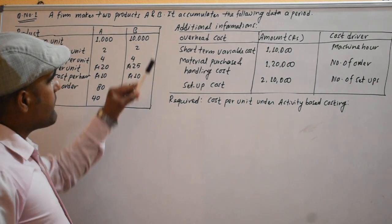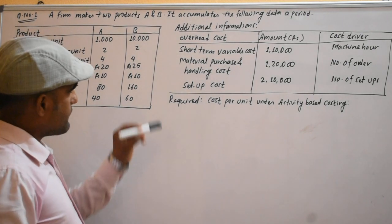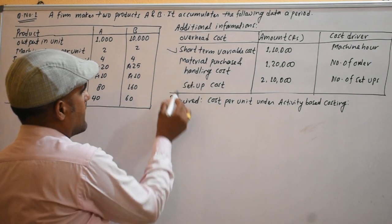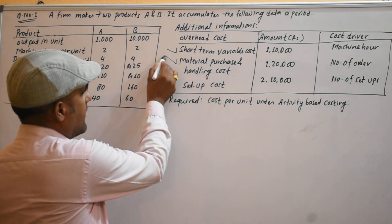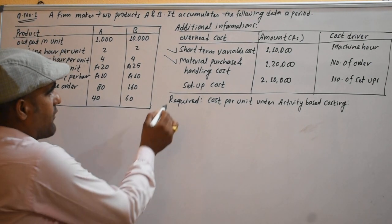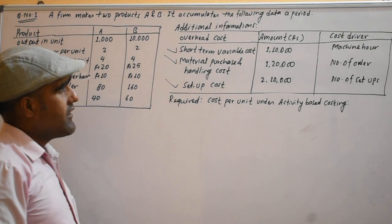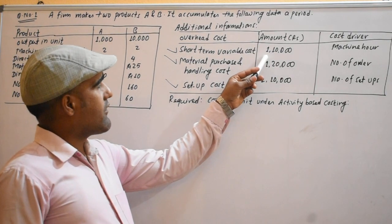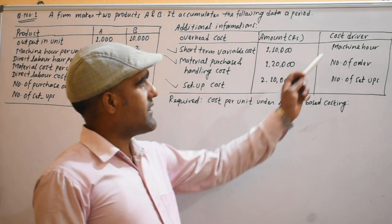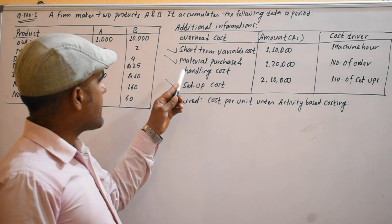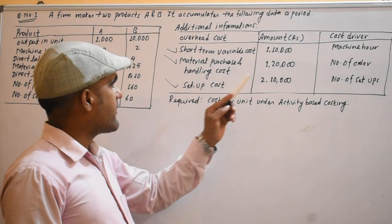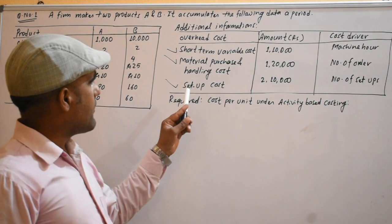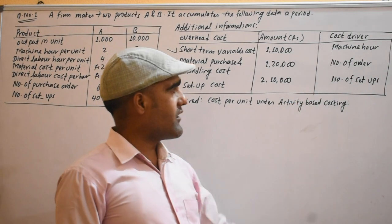Now, what additional information do we have? Overhead — this is short-term variable cost. The cost of the first activity is $10,000, and the cost of the second activity is $20,000.